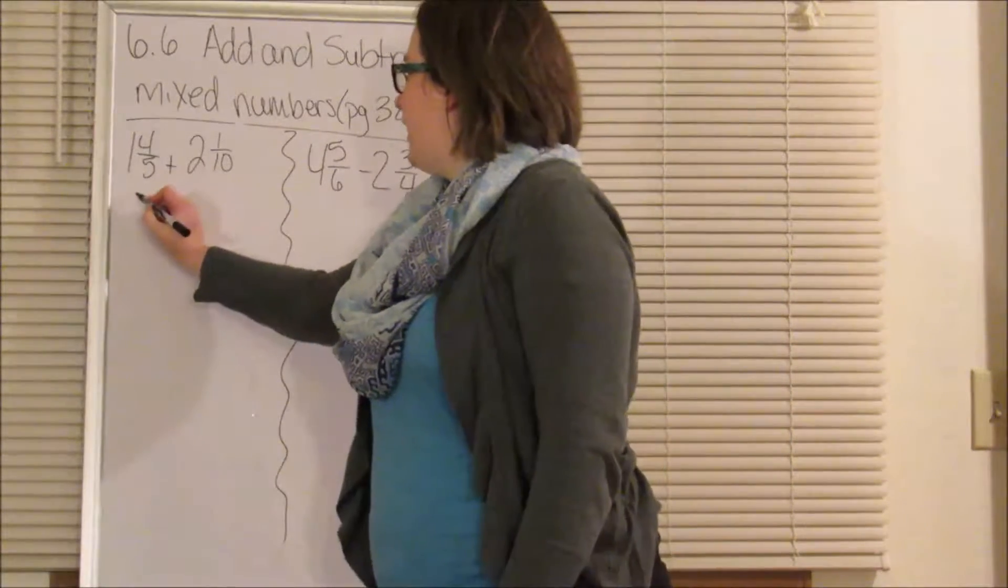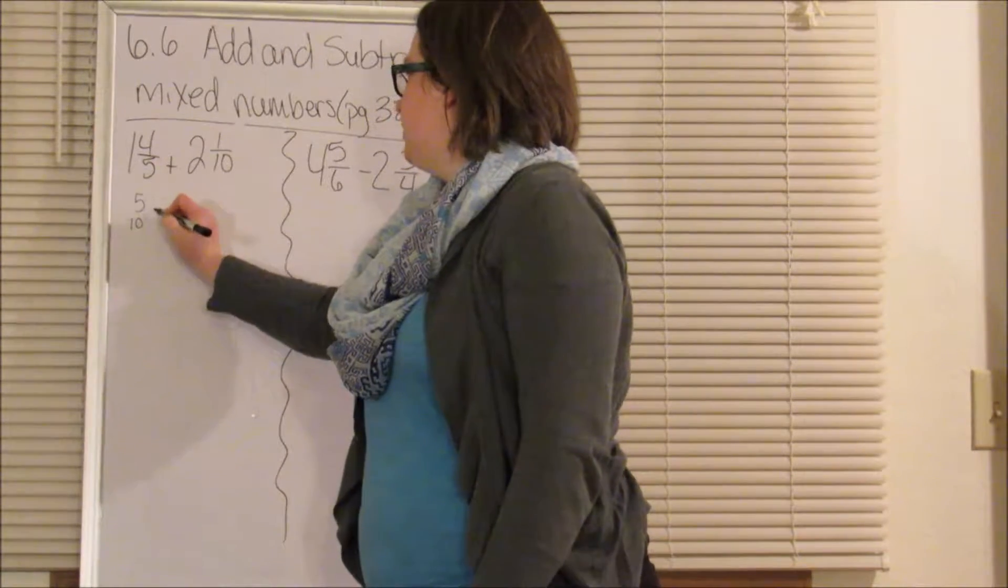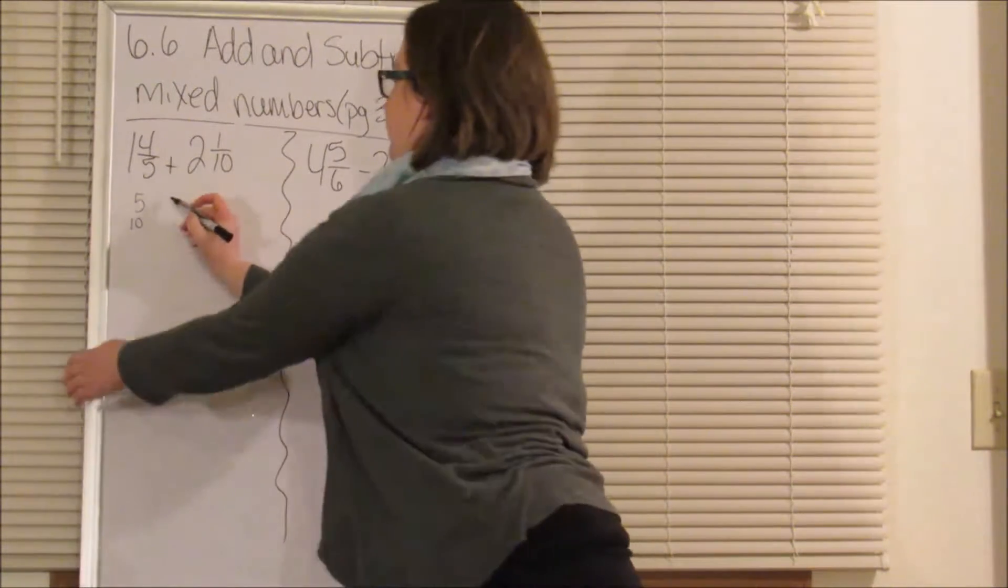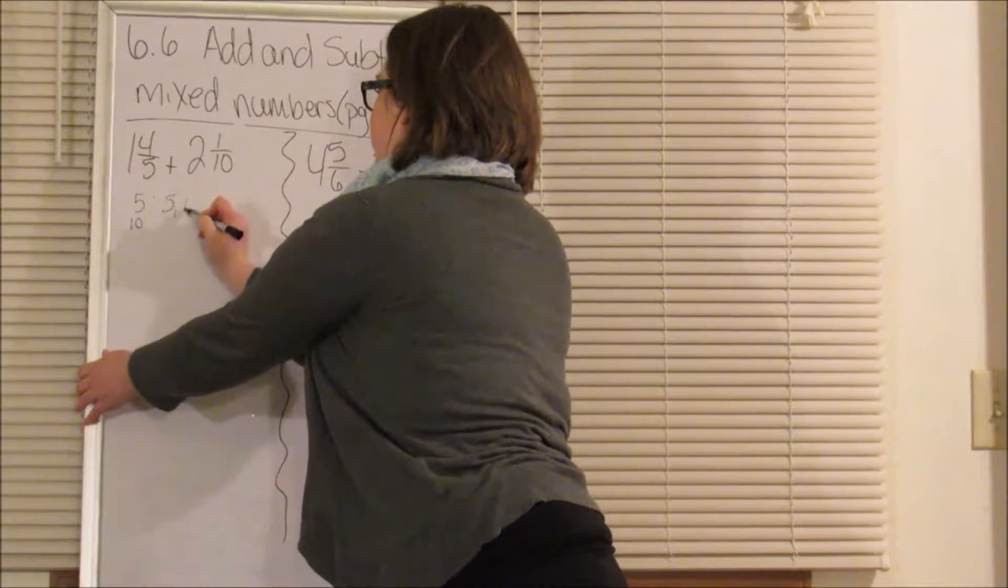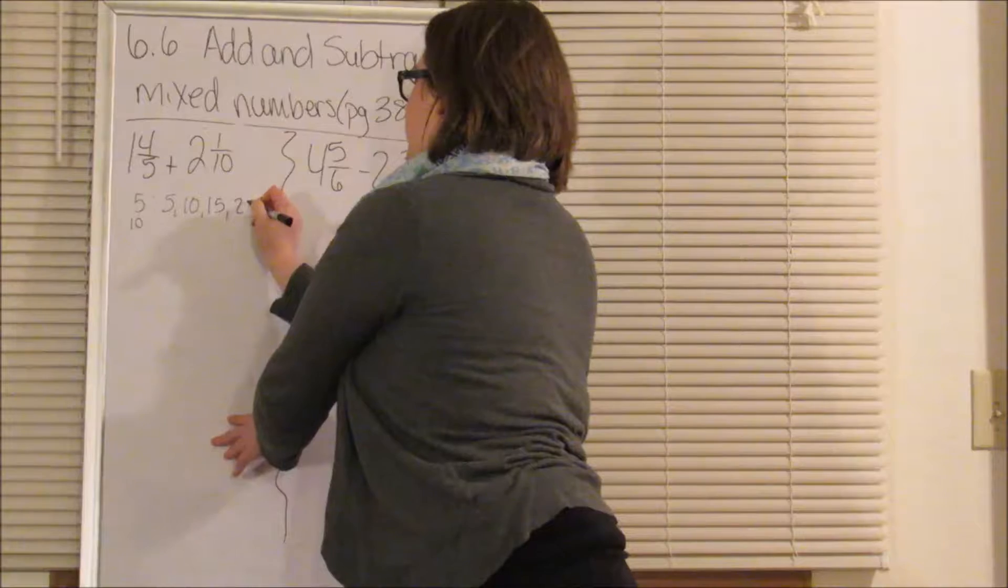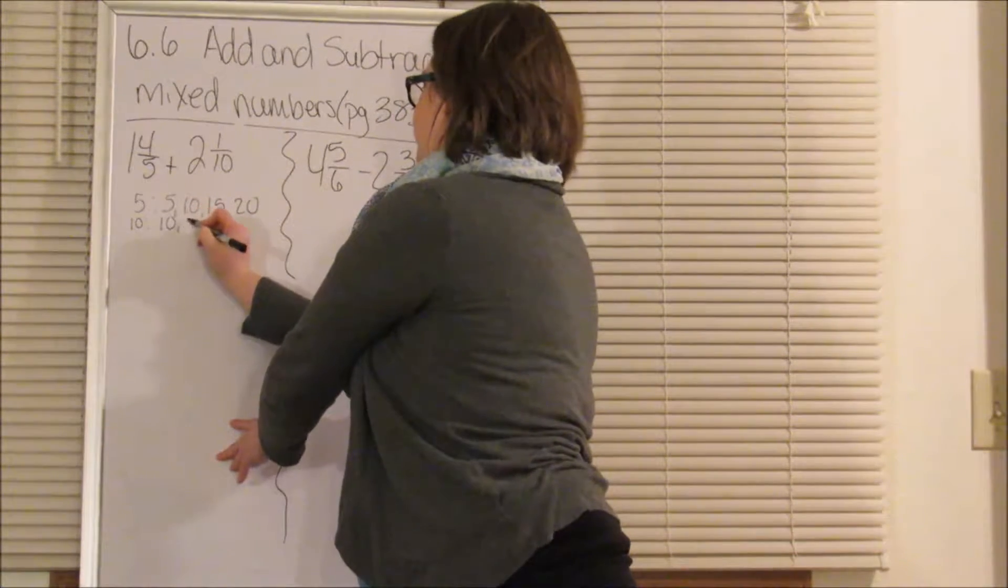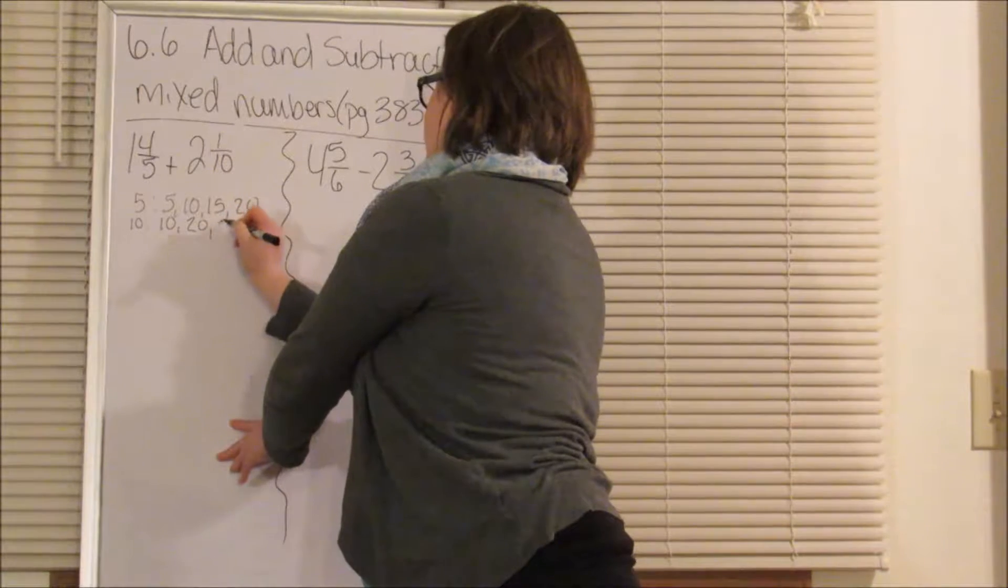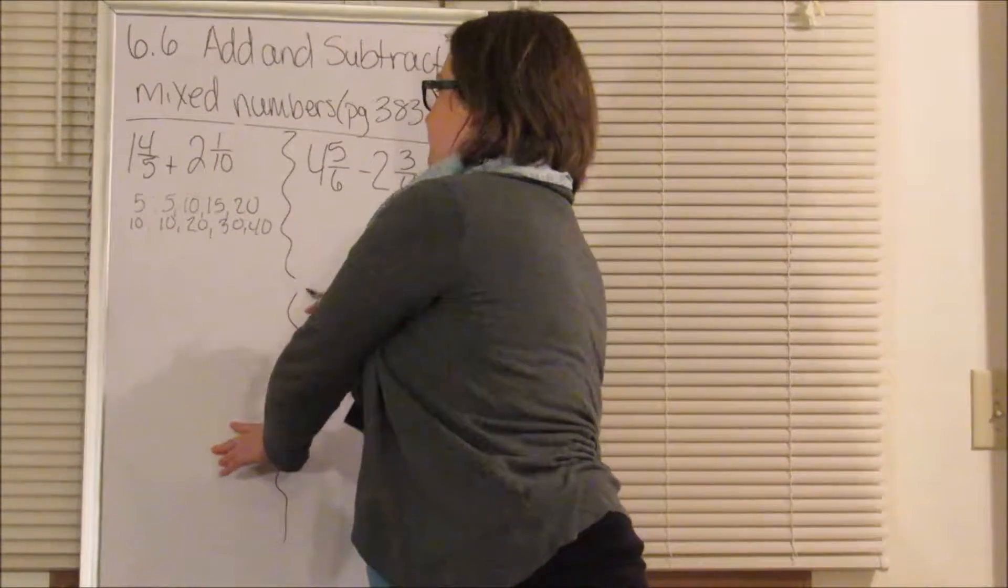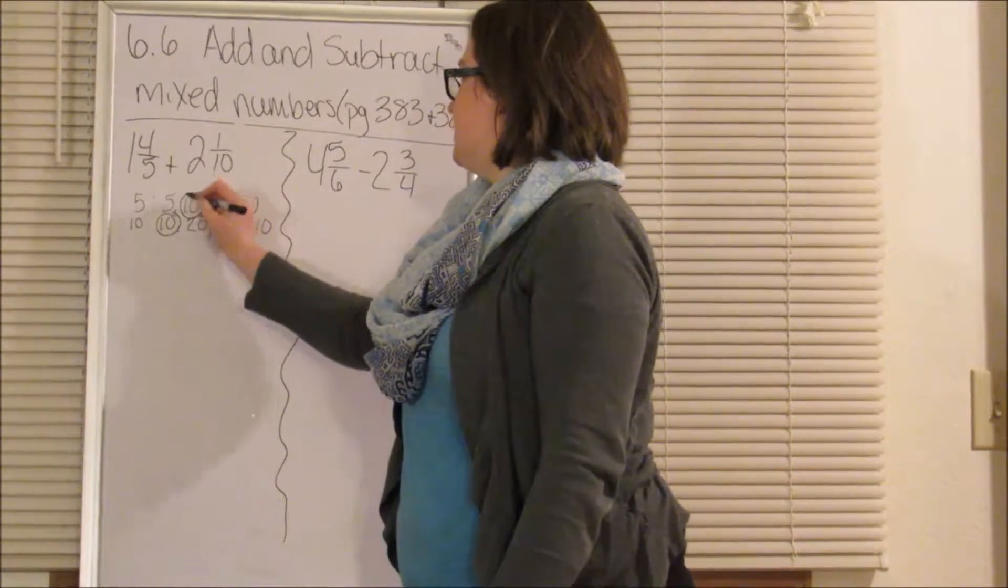So we have 5, and we have 10. So our multiples of 5 are 5, 10, 15, 20. And our multiples of 10 are going to be 10, 20, 30, 40. Which means our common denominator is 10.